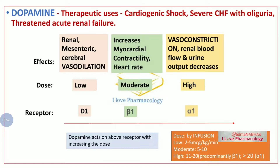At the lower dose, dopamine has greater sensitivity towards the D1 receptor, which is present in the renal, mesenteric, and cerebral blood vessels, where it causes vasodilation by increasing cyclic AMP. Also at the lower dose, the D1 receptor present in the proximal tubular cells gets activated, leading to natriuresis. This natriuresis effect may be helpful in cases of CHF.